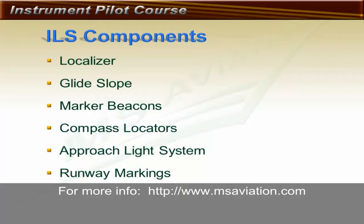An instrument landing system is made up of a localizer and glide slope as the primary navigation aids. Most ILSs will also have marker beacons or compass locators for ranging information. ILS components also include the approach light system and runway markings. We'll look at each of these over the next few slides.